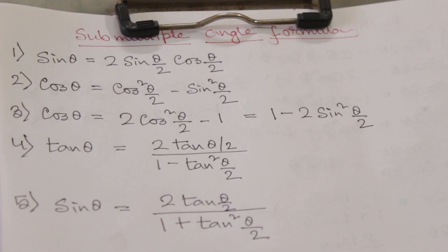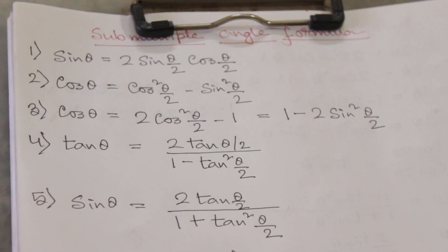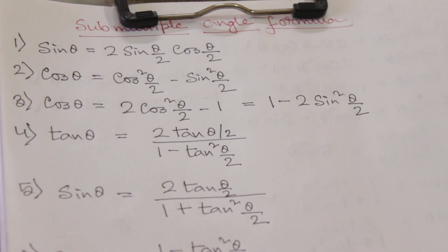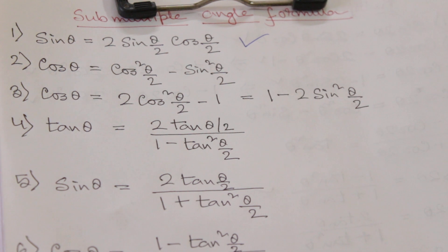There are total 12 formulas. Keep remembering all these. Formula number one is sin θ which is equal to 2 sin θ/2 cos θ/2. Formula number two is cos θ which is equal to cos² θ/2 minus sin² θ/2.